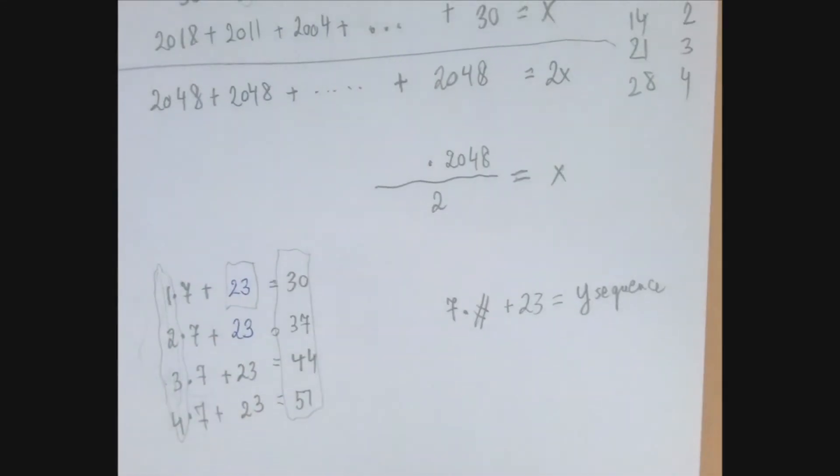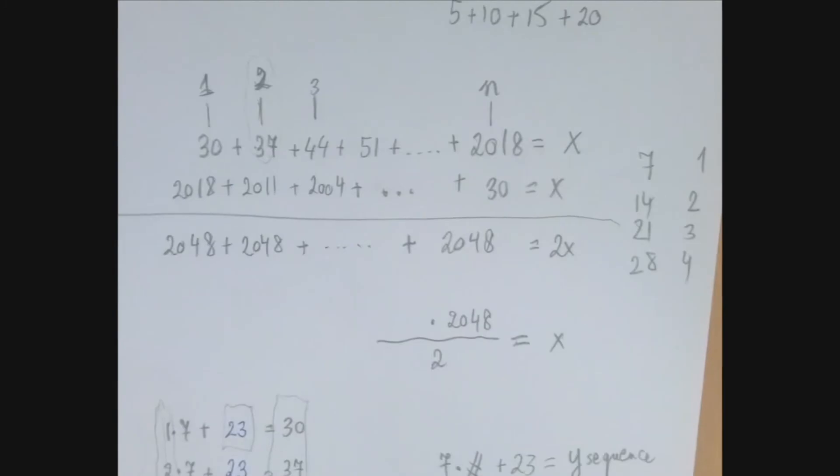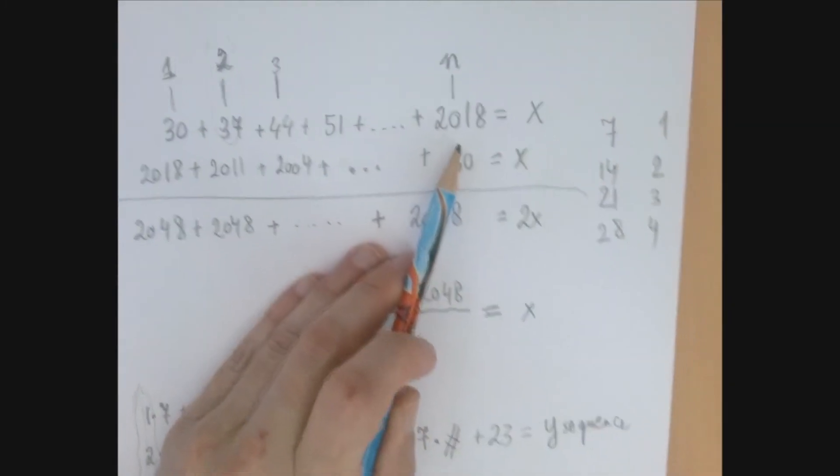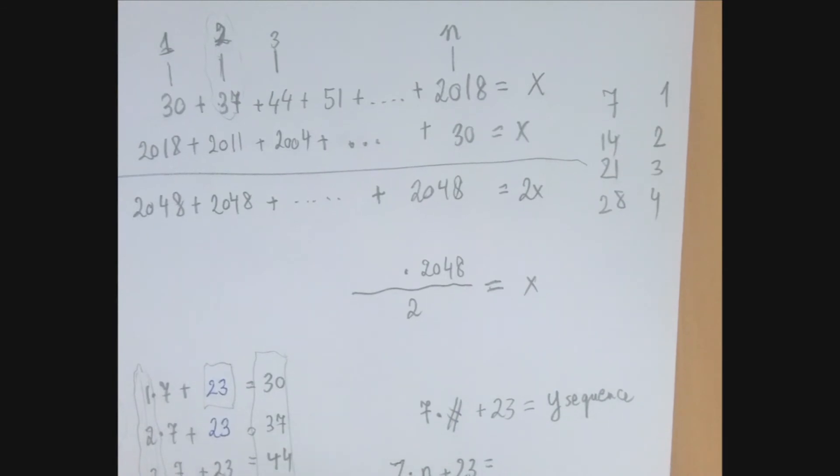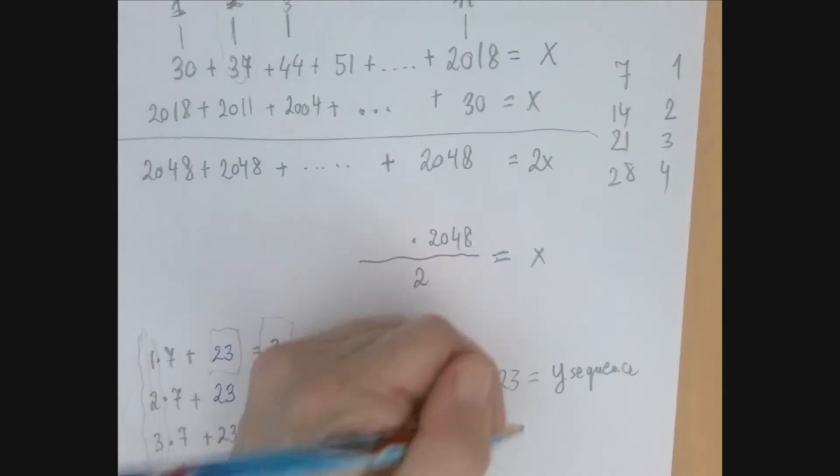Terrible notation, sorry. And remember, the goal is to find this number here. Well, now we know what the connection is, right? If we multiply the label number by 7 and add 23 to that, we should get 2018.